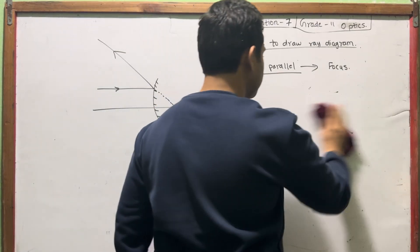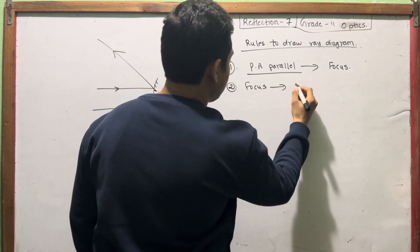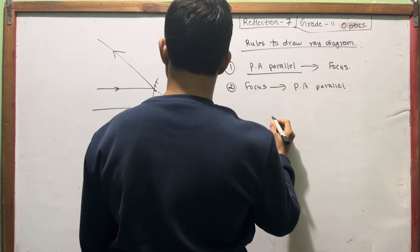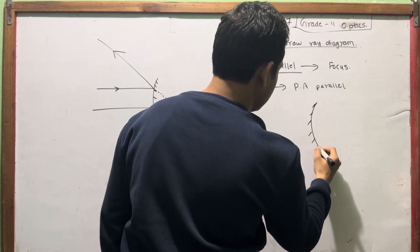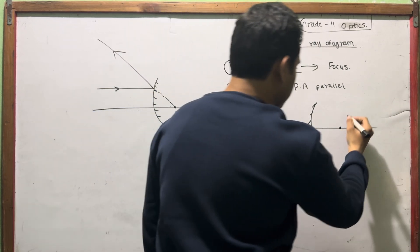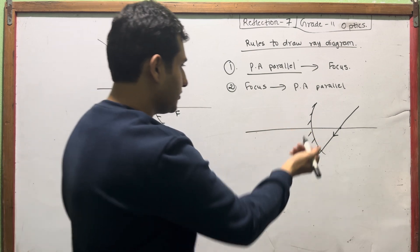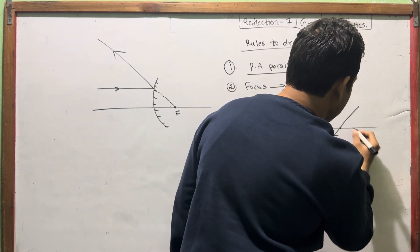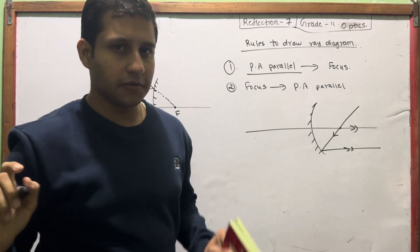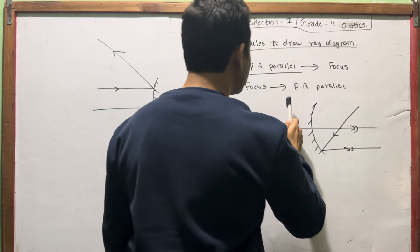Let's move on to number two. Rule number 2: we can focus on the principal axis parallel. Rule number 1, we find the principal axis parallel ray and it goes through focus. Rule number 2, the ray goes through focus so the principal axis is very different — it goes parallel.